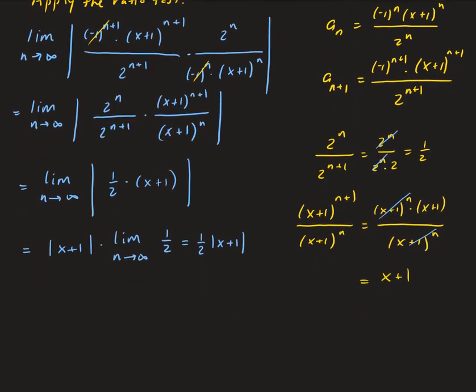For this series to converge, we need to find which x values it converges for. So we set up: one half times the absolute value of (x+1) less than one, because that is the condition for convergence from the ratio test. This is the same as |x+1| less than two.